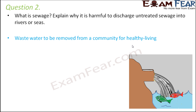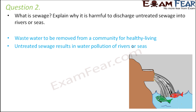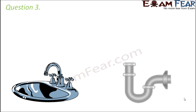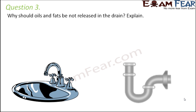Sewage also contains chemicals, pesticides, and paints. If it is directly disposed of into a river, it will pollute the entire river water. When the water gets polluted, all aquatic life is destroyed — all living organisms in that river or sea will die.